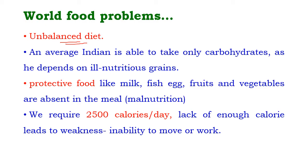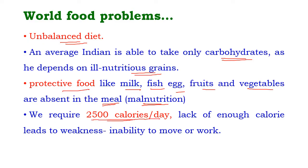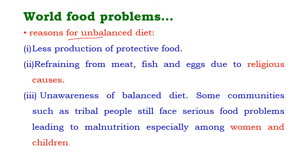Unbalanced diet: an average Indian is able to take only carbohydrates in his food as he depends on ill-nutritious grains. Protective foods like milk, fish, egg, fruits, and vegetables are absent in the meal, leading to a condition called malnutrition. An average person requires 2,500 calories per day, and a lack of enough calories leads to weakness — the inability to move or do any work.